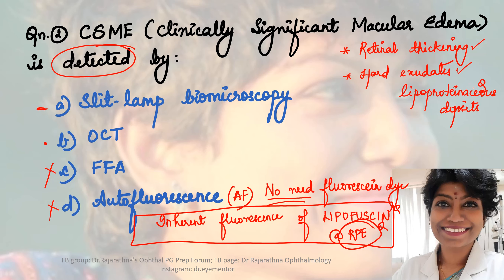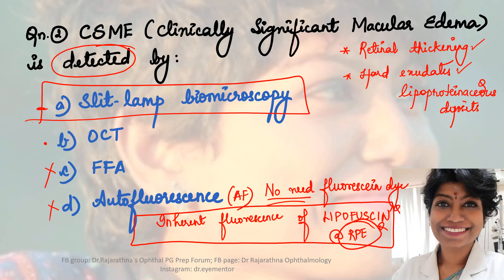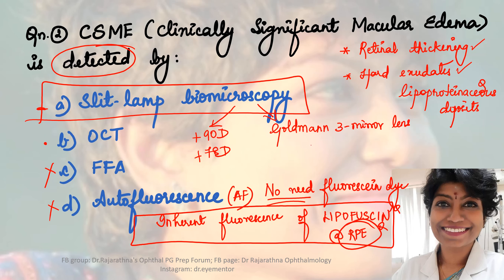Coming back to the answer - CSME is detected on slit lamp biomicroscopy. Only after finding it clinically would I order an OCT to quantify the retinal thickening. To visualize the fundus on slit lamp biomicroscopy, we use lenses such as a 90-diopter lens, a 78-diopter lens, or a Goldmann three-mirror lens. The Goldmann three-mirror gonioscope has a central lens of power +60D. Using any of these techniques you can do slit lamp biomicroscopy to visualize the fundus.